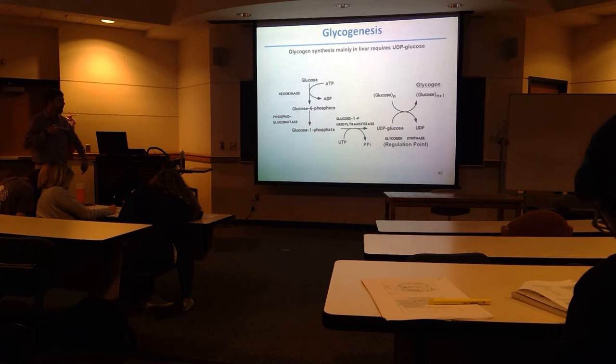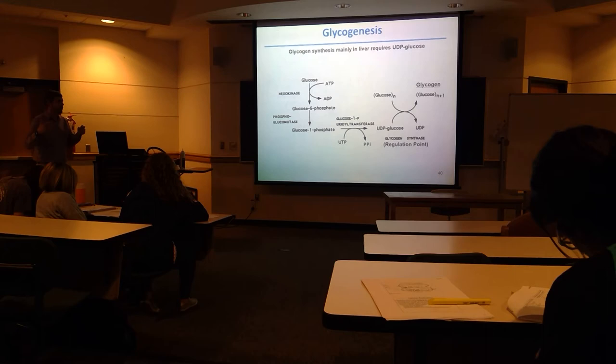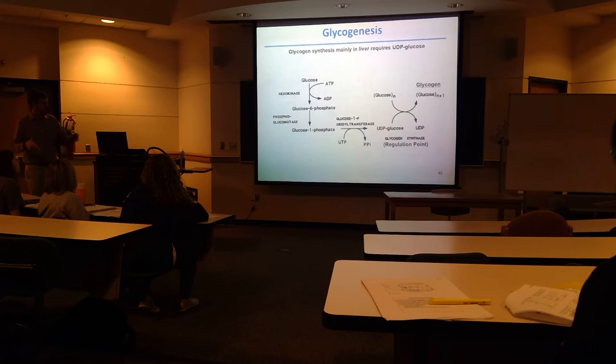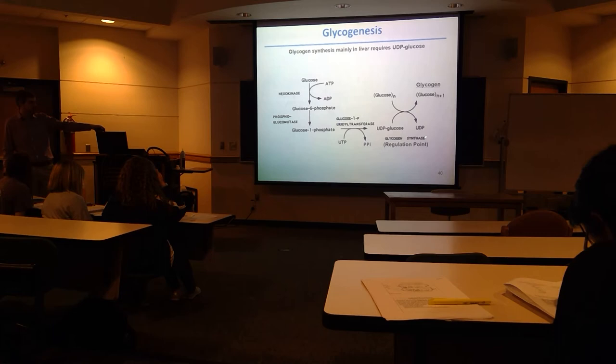Glycogen synthase is the main regulation point for glycogenesis. Since the first enzyme is part of glycolysis, the first specific enzyme important for regulating glycogenesis that we'll talk about is glycogen synthase. That's the step heavily regulated by hormones to decide whether or not you're actually making glycogen.